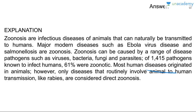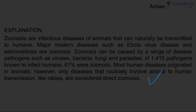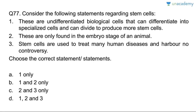Most human diseases originally came from animals, but only diseases that routinely involve animal-to-human transmission, like rabies, are considered direct zoonoses. For example, if a rabid dog bites you, you will almost certainly contract rabies unless vaccinated.